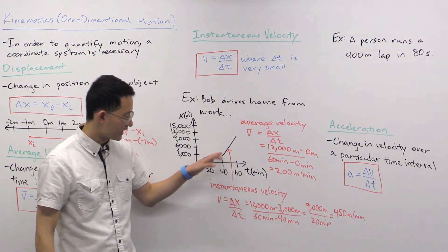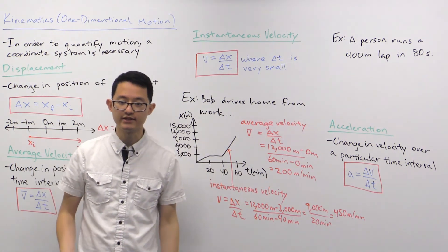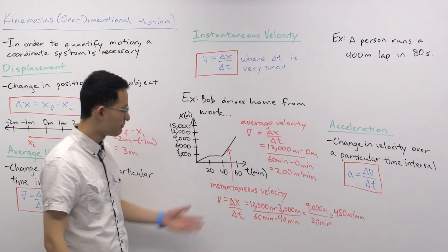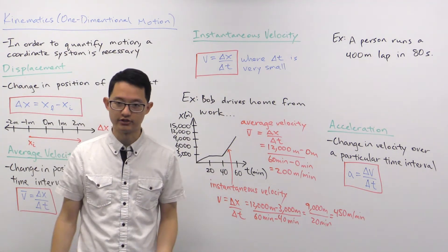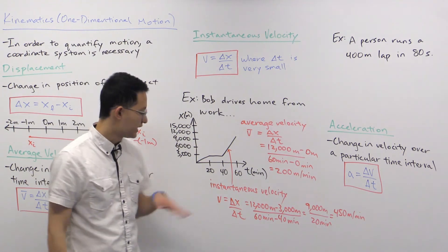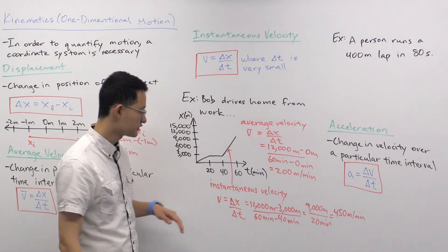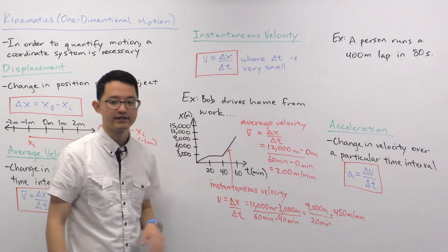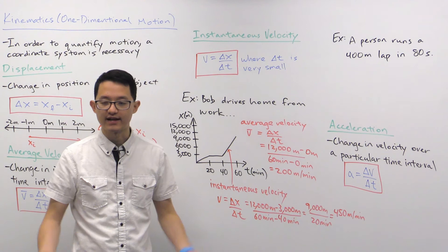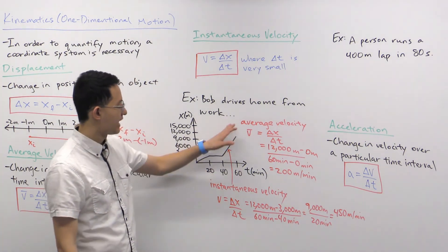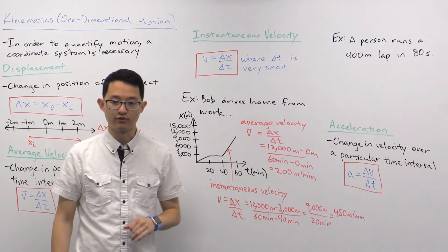The instantaneous velocity of 450 meters per minute is much larger than the average velocity of 200 meters per minute, and that makes sense — Bob was not traveling that fast throughout his entire trip. There were parts where he wasn't moving and parts where he was moving slowly due to traffic. Again, instantaneous velocity asks how fast you are moving at any instant, whereas average velocity looks at the entire travel as a whole.